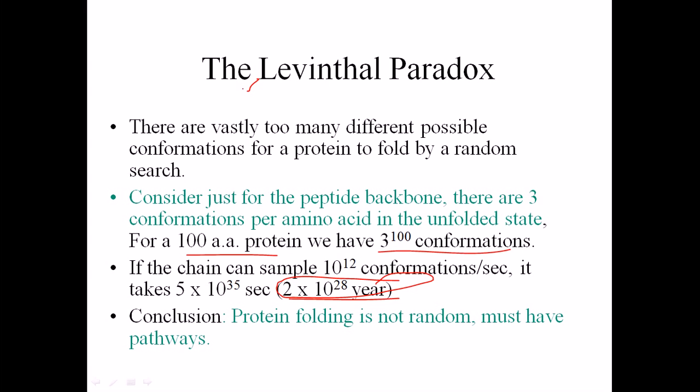This is called the Levinthal Paradox and how this paradox is solved? The conclusion is that the protein folding is not random. That must have pathways.